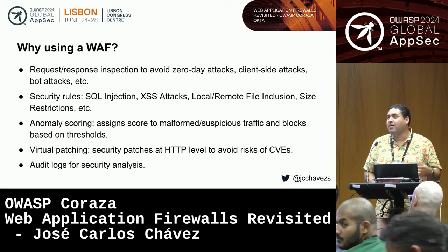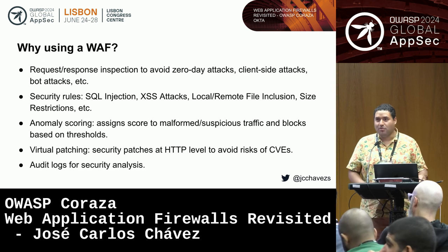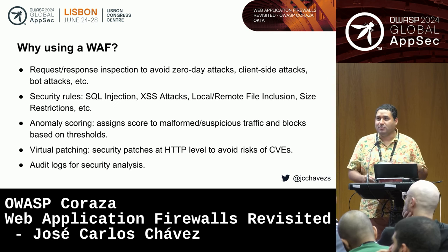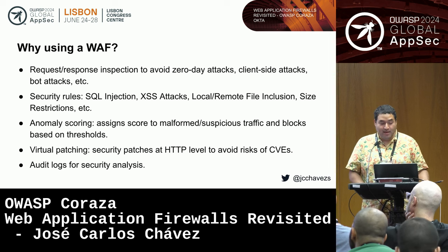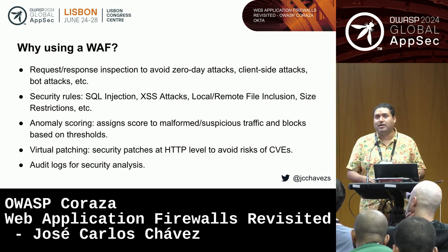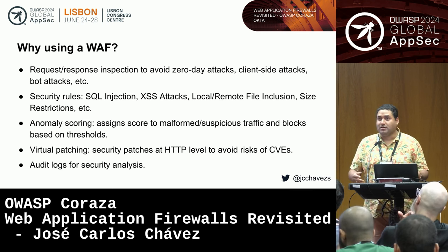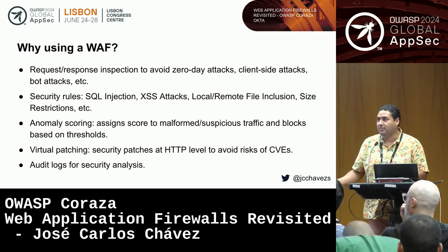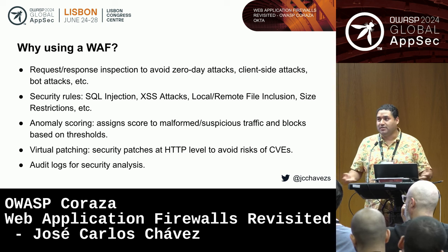Anomaly scoring is another feature — not every attack attempt generates the same level of deviation from a typical payload. With a WAF you inspect different aspects of the request, give each offending element a score, and based on different thresholds decide whether to block it or not. Another important feature is virtual patching. For example, Amazon addressed log4shell so quickly not by patching every application running log4j, but by patching it at the network level — blocking the offending traffic pattern at the HTTP level. That helps you avoid risk from disclosed CVEs and zero-day vulnerabilities.